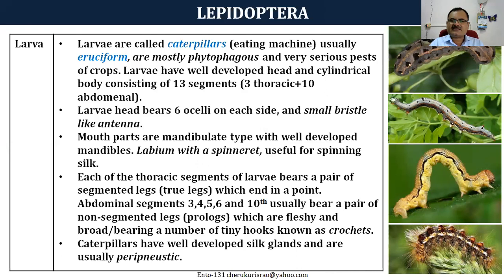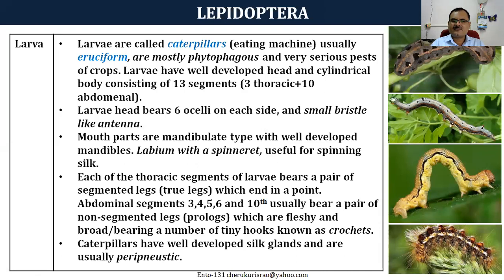Larvae also have prolegs — false or fleshy legs — usually on the third, fourth, fifth, sixth, and tenth abdominal segments, making five pairs. In loopers, some prolegs are absent. A semi-looper lacks functional prolegs on the third and fourth abdominal segments, creating a loop-like movement when walking. Loopers lack prolegs on the third and fourth segments too, but have them on the fifth, sixth, and tenth. They also have crotchets — tiny hook-like structures used for gripping surfaces so they don't fall.